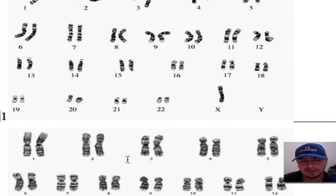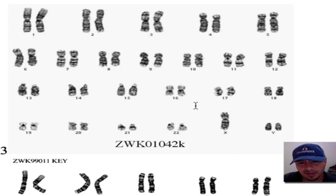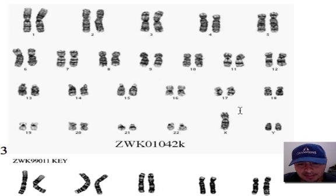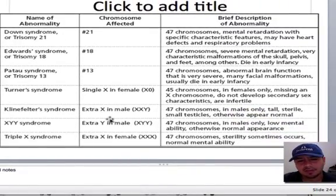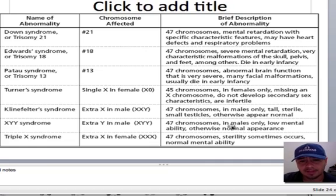Let's look at sample three. We look across — everything's paired. Everything looks fine. But at the 23rd pair, instead of two we have three — an extra chromosome, so 47 total. It's X, Y, Y. Looking at our chart, just as you might have predicted, we see it's XYY Syndrome. It's a boy, and it's going to have the characteristics listed on the chart.